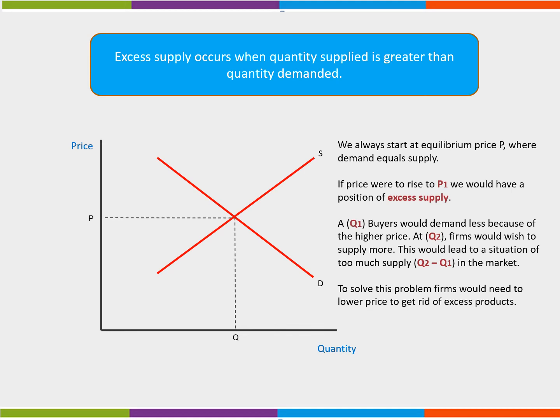Excess supply occurs when quantity supplied is greater than quantity demanded. We always start at equilibrium price P, where demand equals supply. If price were to rise to P1, we would have a position of excess supply.